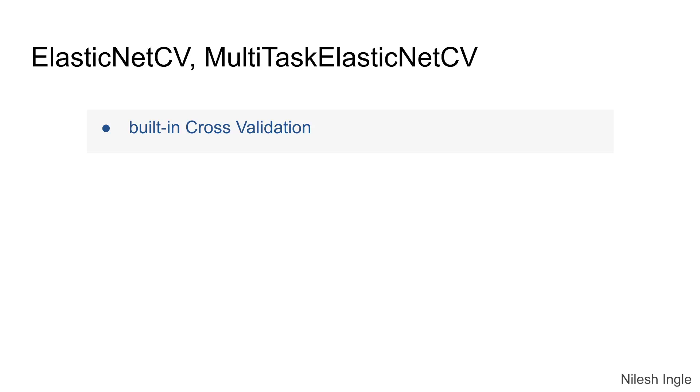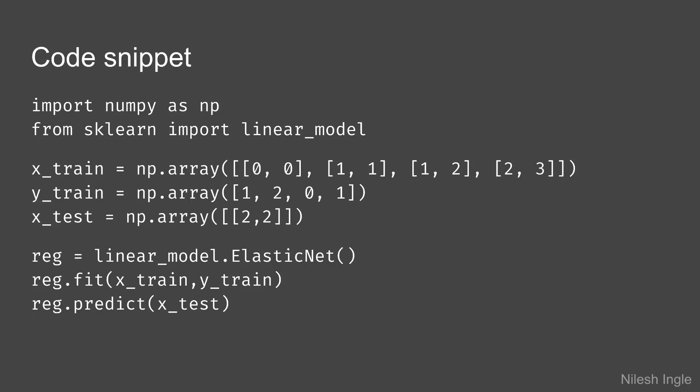So those are really helpful functions where we can tune the parameter, the values for alpha and the values for L1 ratio. The L1 ratio is what decides if the weight of L1 norm is more or the weight of L2 norm is more, so we can balance that.